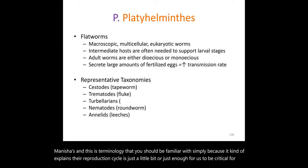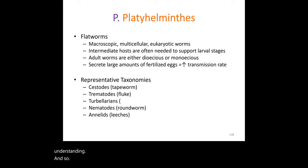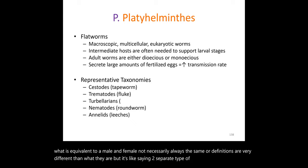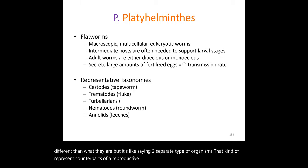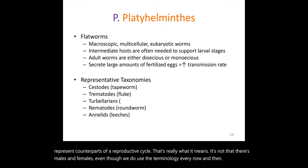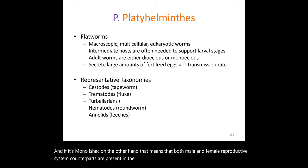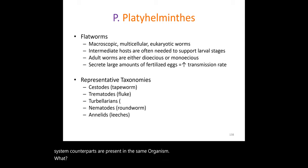Dioecious—'di' meaning two—refers to two separate individuals representing male and female counterparts in the reproductive cycle. Monoecious—'mono' meaning one—means both male and female reproductive system counterparts are present within the same organism.